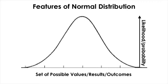So this is a typical shape of normal distribution. And you should not use the word 'normal' in normal distribution in the everyday sense. So when a distribution is not normal, then it is not an 'abnormal' distribution.